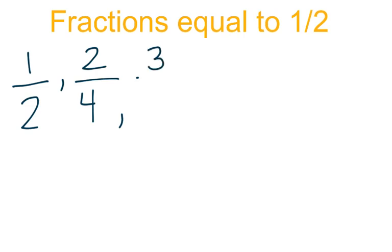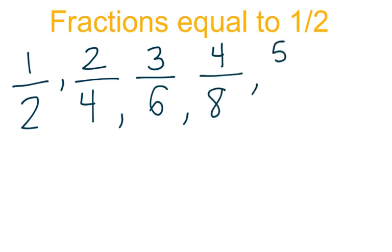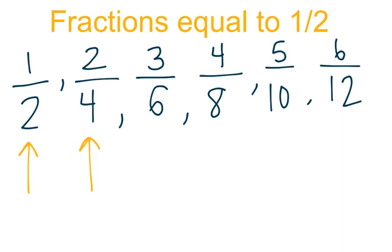If my numerator is 3, I double 3, and that equals 6. With the numerator 4, 4 doubled is 8. 5, 5 doubled is 10. With the numerator 6, we double that, and our denominator is 12. So, we have 1 half, 2 fourths, 3 sixths, 4 eighths, 5 tenths, and 6 twelfths. All those fractions are equal to 1 half.